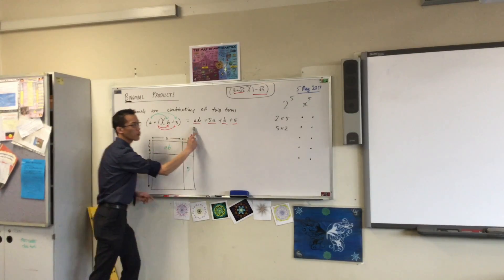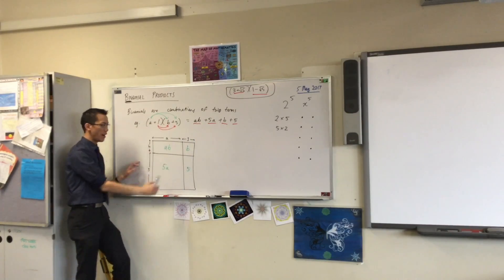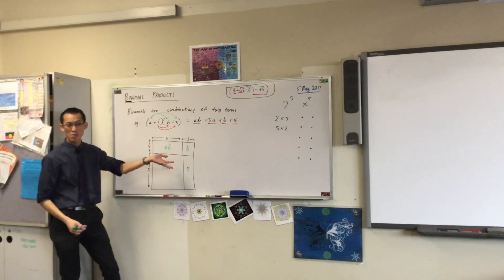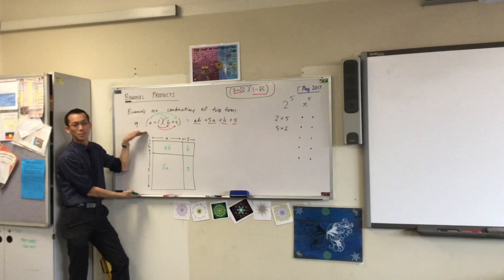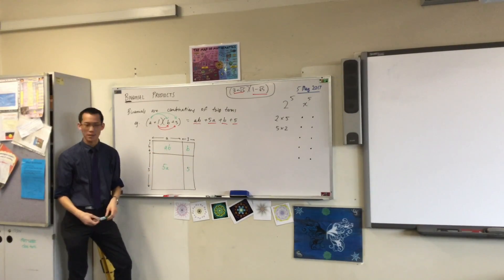So you see, what we wrote down here by going 1, 2, 3, 4, is just what you've represented in a shape. So this is a binomial product. This is a binomial, A plus 1. This is another binomial, B plus 5. And that's why you get all these four pieces out. Okay?